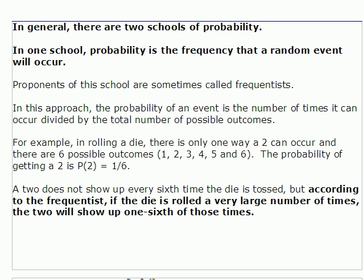The one school of thought that has become the most popular, at least in the previous century, is the frequentist approach. In this school of thought, the probability that something will happen is developed just by considering the number of ways it can happen, divided by the number of possible outcomes in the experiment.